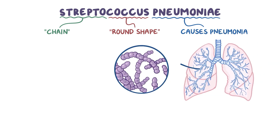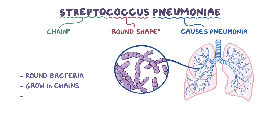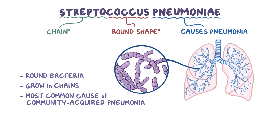So, strep pneumoniae are round bacteria that tend to grow in chains, usually in lancet-looking pairs, like diplococci. They're the most common cause of community-acquired pneumonia, meaning pneumonia acquired somewhere other than the hospital.